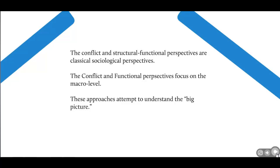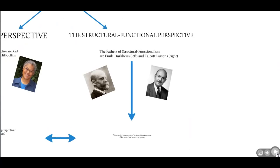Both of these perspectives are macro-level. The Europeans like to think in terms of big picture. The Americans, after the 1950s, developed micro-level perspectives of sociology — that mirrors the American emphasis on the individual, choice, and agency. The Europeans were big fans of macro-level and ideas like determinism. So let's turn to the first one: the structural functional perspective.